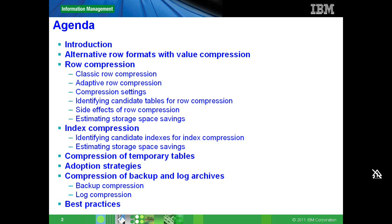We will be talking about various ways to compress the data. We will also talk about different algorithms in DB2 across different versions — classic row compression and adaptive row compression. We will also talk about how to have compression for tables, for indexes, and how to enable compression for temporary tables, as well as compression for backup and archive logs.